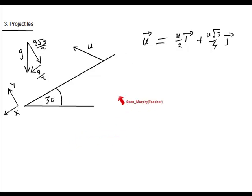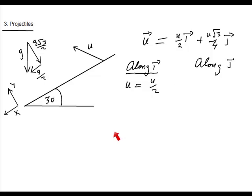And now, as always with projectiles, we resolve separately along i and along j. So along i, or the x axis, the same thing. Along i, u is equal to u over 2. And along j, u is equal to u root 3 over 4.